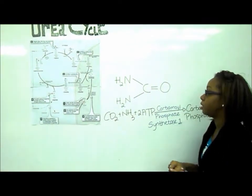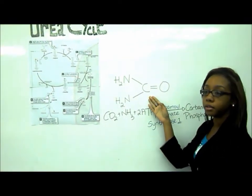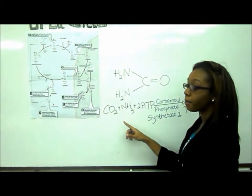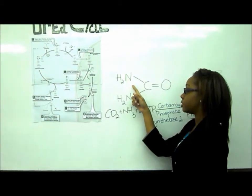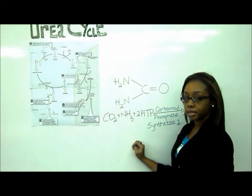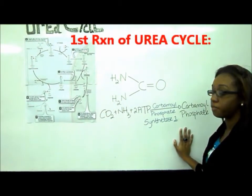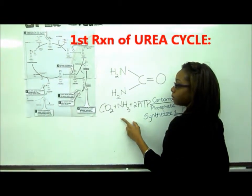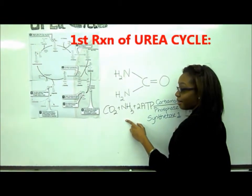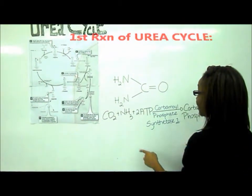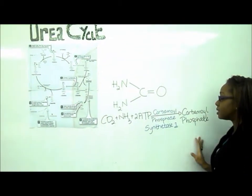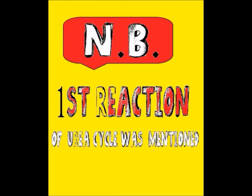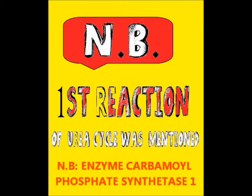The urea molecule contains one carbon and two nitrogens. The carbon comes from carbon dioxide. One of the nitrogens comes from free ammonia, and the other comes from aspartate. So for the first reaction of the urea cycle, we have carbon dioxide plus free ammonia, requiring two ATPs, to give us carbamoyl phosphate.